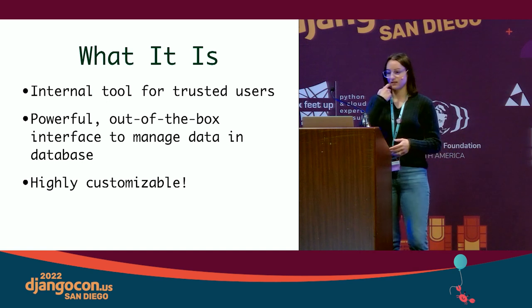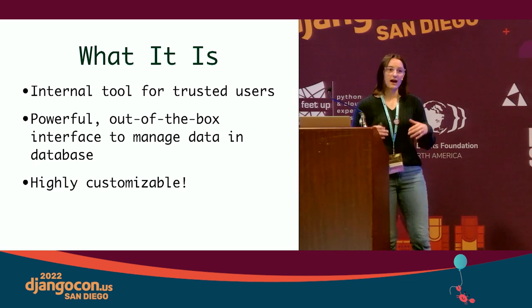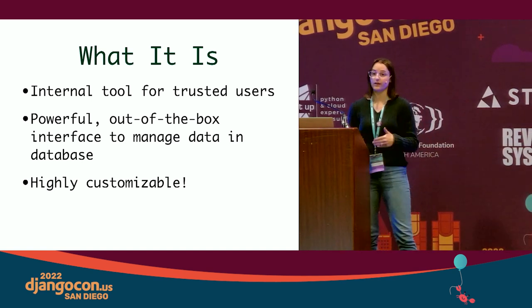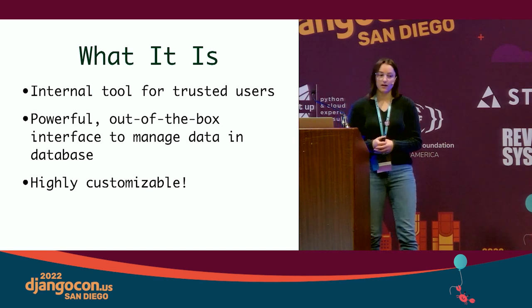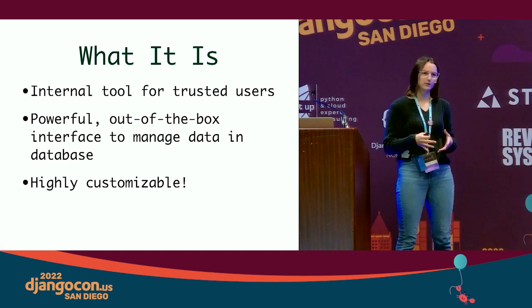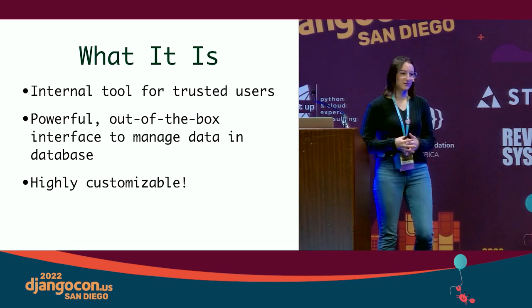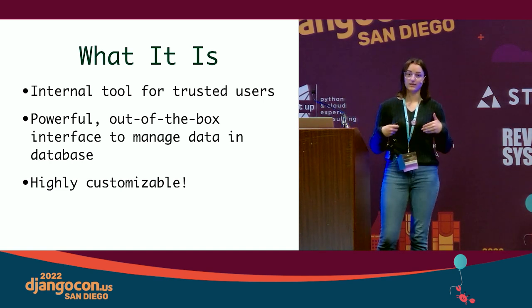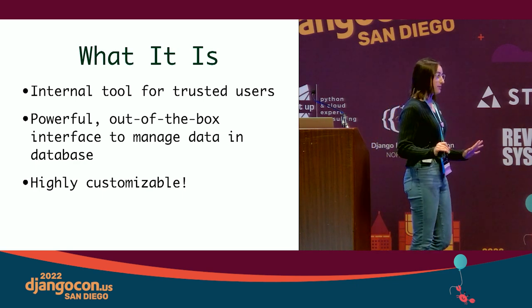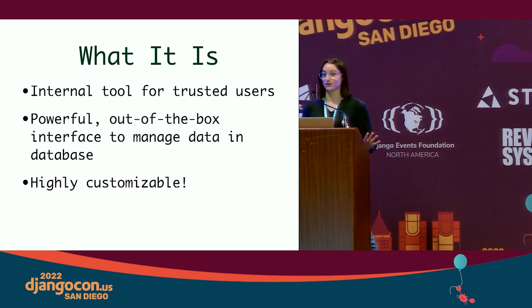It's an internal tool for trusted users — basically a portal to your database. Users with superuser status can select all rows and delete them, so it's very important that only trusted internal users access this. It's a very powerful out-of-the-box interface to manage data. Django is one of the only web frameworks that has something like this — Rails does not. The Django docs say to beware of over-customization, but I say let's go for it and really push it to its limits.